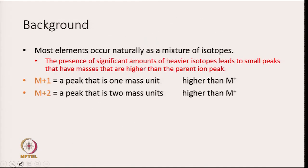Most elements occur naturally as a mixture of isotopes. The presence of significant amounts of heavier isotopes leads to smaller peaks at masses higher than the parent ion peak. For example, you can also see a peak with m/z of M+1 — a peak that is one mass unit higher than M+. You can also see a peak that is two mass units higher than M+.